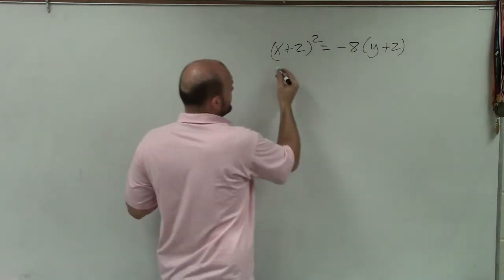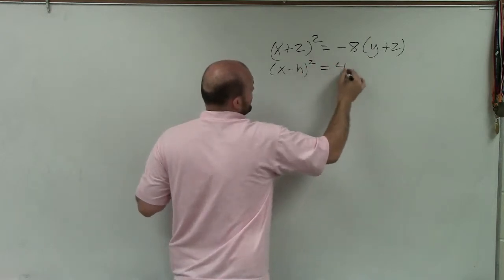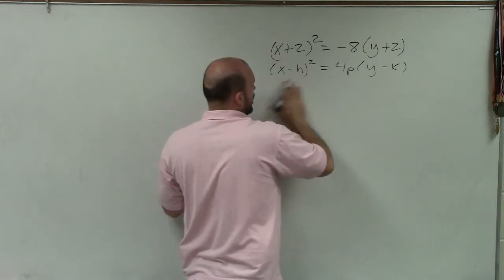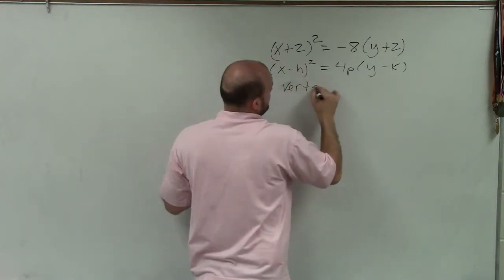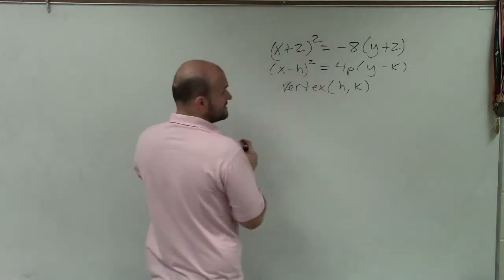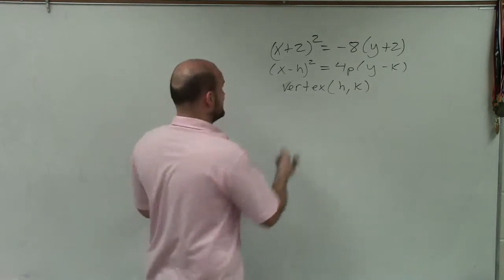So since our x is squared, we're going to look at our general form of (x - h)² = 4p(y - k). Now, the h and the k represent our vertex. So our vertex is in the form of h comma k. So therefore, to identify the vertex to help me graph this...